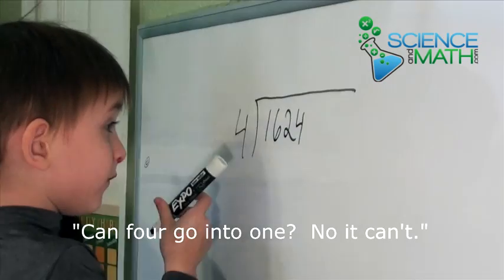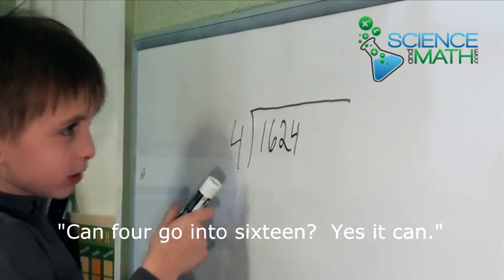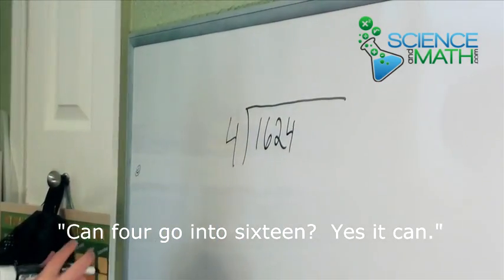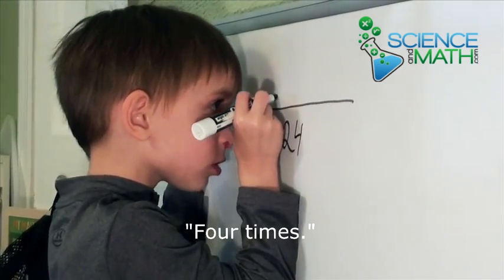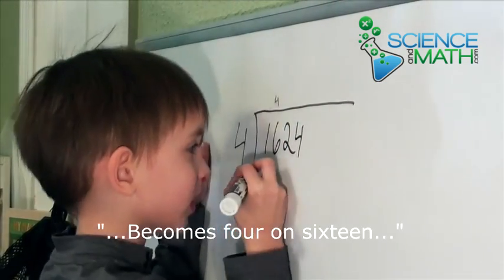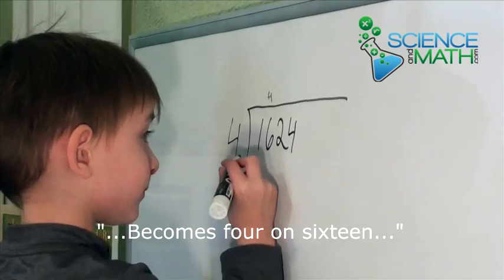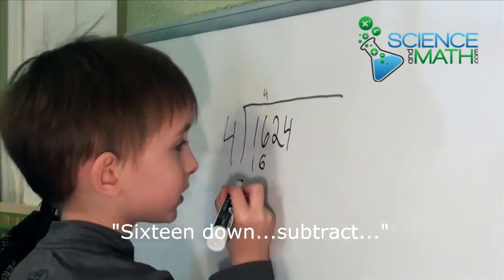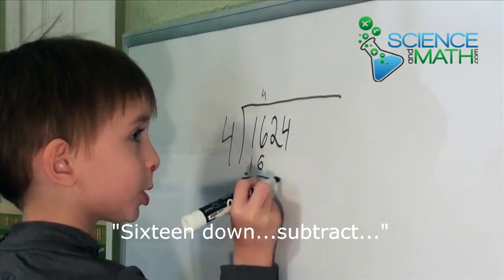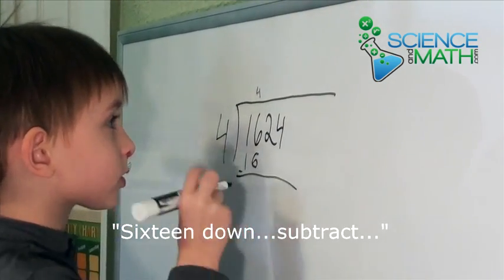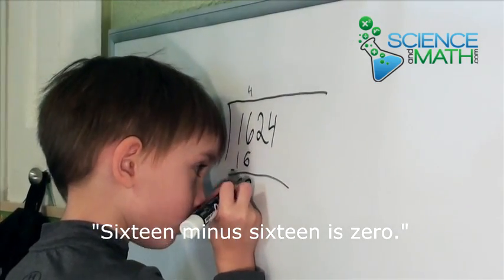What can 4 go into 1? No, we can't. And 4 go into 16 — there's a count. 4 times 4 is 16. 16 now. 16 minus 16 is 0.